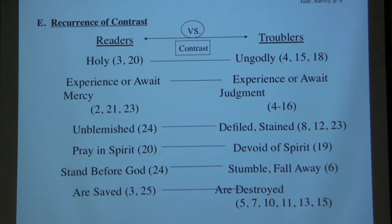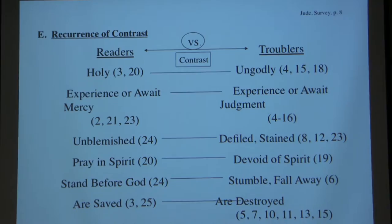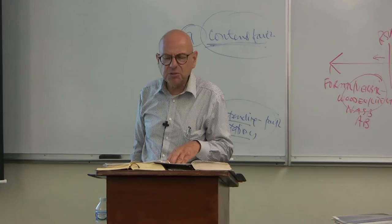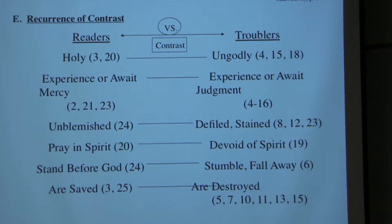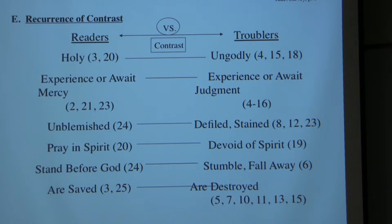We also have a recurrence of contrast. In most books you have anywhere from 3 to 6 or 7 major structural relationships, and that's what we're finding here. You have a recurrence of biographical contrast between the readers and the troublers: the readers are described as holy in verses 3 and 20, whereas the troublers are described as ungodly in verses 4, 15, and 18.